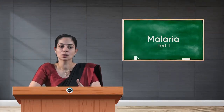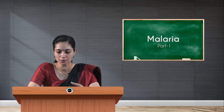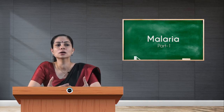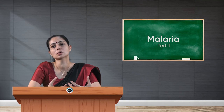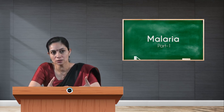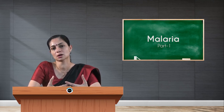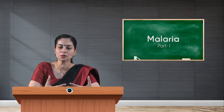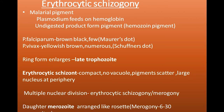During the early ring stage, plasmodium feeds on hemoglobin and the undigested product forms a hemozoin pigment. We can differentiate Plasmodium falciparum and Plasmodium vivax by this pigment. In falciparum-infected RBCs, brown and black dots called Maurer's dots are seen. In Plasmodium vivax, yellowish-brown, numerous dots called Schüffner's dots are seen. Presence of Maurer's dots indicates falciparum, while Schüffner's dots indicate vivax infection.